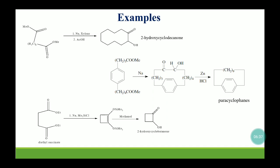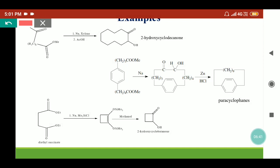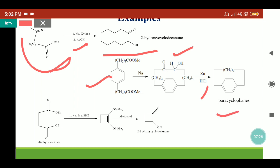Here we have some more examples where by acyloin condensation we can form larger rings as well. A large dibasic ester molecule in presence of sodium followed by acidic workup yields a large cyclic ring — its name is 2-hydroxycyclodecanone. In similar fashion, acyloin condensation can be used to prepare paracyclophanes: this molecule reacts with sodium and, because it is a dibasic ester, the two ester groups couple together and form the acyloin.